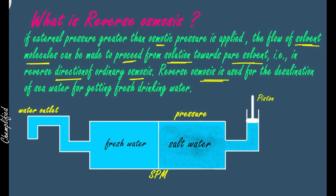Let's understand this with a diagram. Fresh water is our solvent and salt water is our solution. In osmosis, fresh water tries to move towards the solution through the semi-permeable membrane. So we applied a piston and applied pressure to stop this flow — that pressure is osmotic pressure. Now if you increase that pressure beyond osmotic pressure, the pressure on the salt water container increases, and the particles try to move towards the semi-permeable membrane.